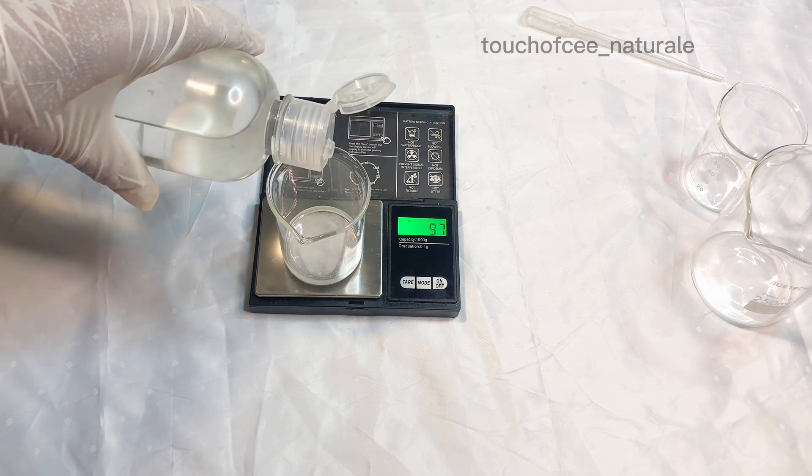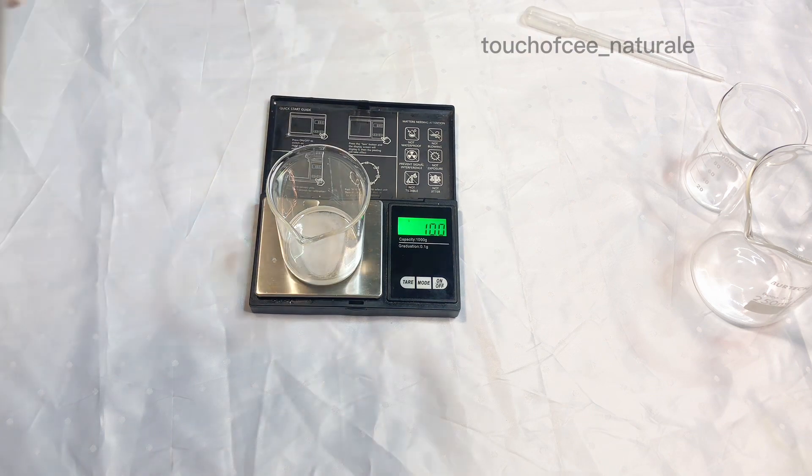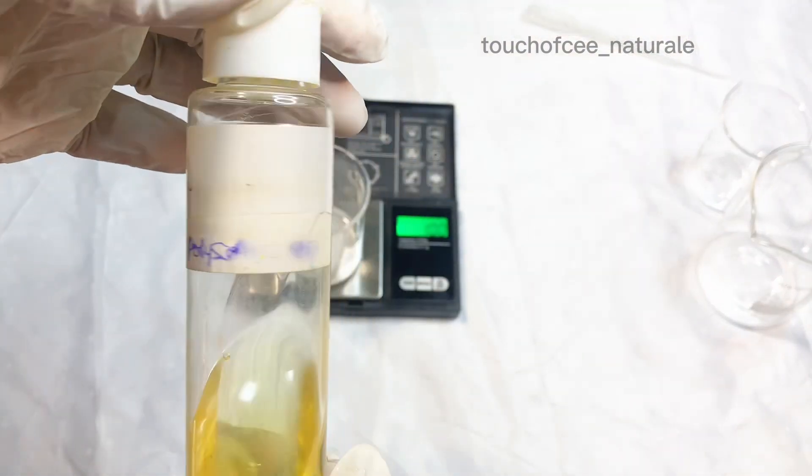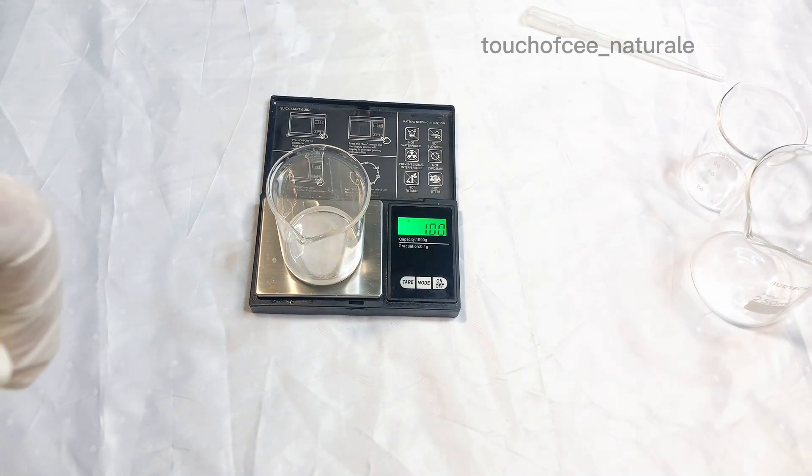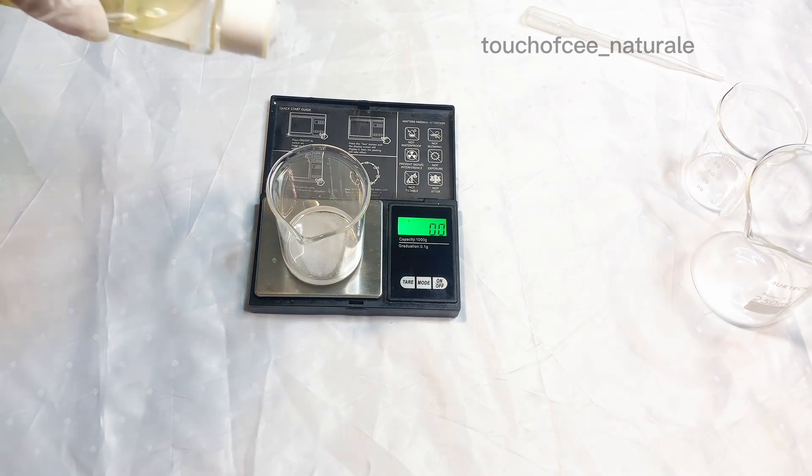First I'm adding the propylene glycol into the salicylic acid powder that I've already measured out. Then up next I'm using my polysorbate 80.